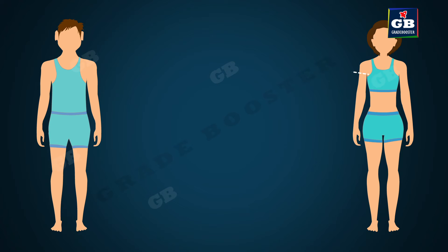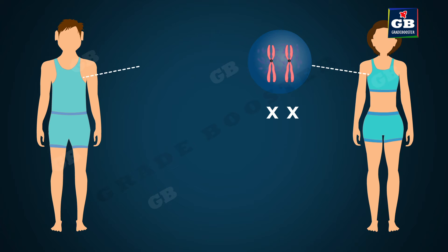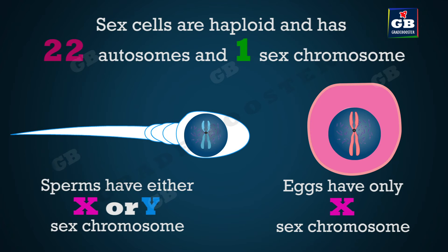Women have a matched pair of sex chromosomes, both called X — written as XX. But men have a mismatched pair in which one is a normal-sized X, while the other is a short one called Y. So females are XX while males are XY.